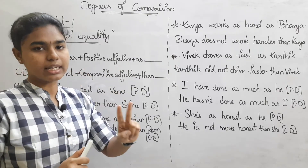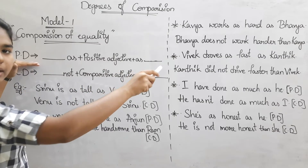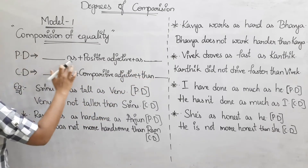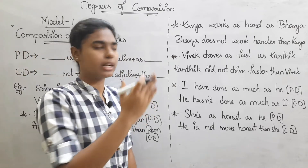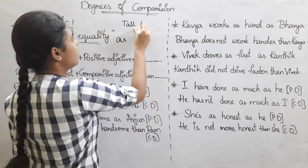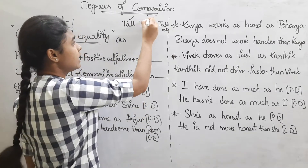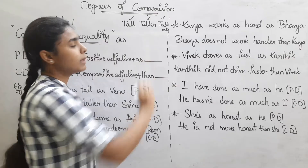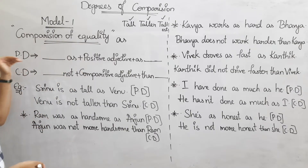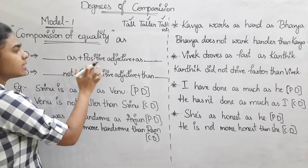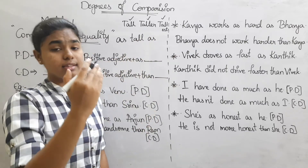So this pattern — the positive degree sentence formation — is: as + positive adjective + as. For example, 'as tall as.' Tall is the positive adjective, taller is the comparative, tallest is the superlative, as you learned last class. So in comparison of equality, the first model positive degree sentence is: as + positive adjective + as — for example, as tall as, as short as, as thin as.